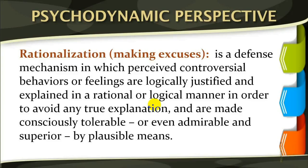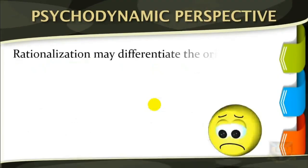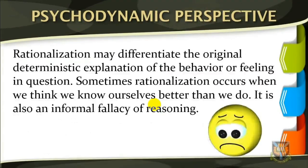People rationalize for various reasons. Rationalization may differentiate the original deterministic explanation of the behavior or feeling in question. Sometimes rationalization occurs when we think we know ourselves better than we do. It is also an informal fallacy of reasoning. An example of rationalization is when someone justifies his or her refusal to help the poor because he or she wants them to be hard-working and self-dependent.